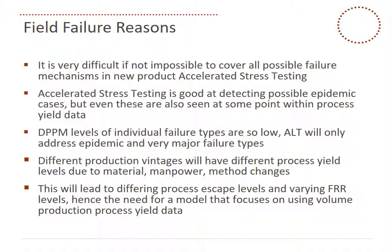The DPPM — defective parts per million — levels of individual failure types in the field are so low that ALT will only address epidemic or major failures. We'll never see these in the ALT, but we will for sure see similar issues in the process. Different production vintages have different process yield levels because of material, manpower, and method changes. If that's the case, we're going to ship different levels of early life defects, leading to differing process escape levels and varying field return rates — hence the need for a model focusing on volume production process yield data.